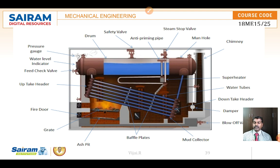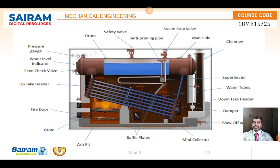The water tubes are located in an inclined manner. When water gets heated up, the hot water becomes less dense and moves upward. Through the inclined pipelines you can see here, the hot water enters into the boiler drum via the uptake header on the left side. When it reaches the uptake header it becomes hot steam, and that steam is stored at the top level of the boiler.